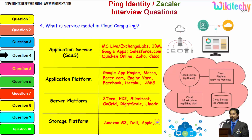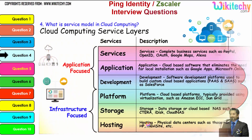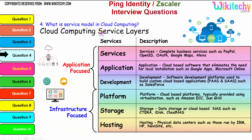Further examples by service model: the application service layer, application platform layer, server platform layer, and storage platform provided by Amazon S3, Dell, and Apple. The service layers are services, application development, platform, storage, and hosting, with typical examples under each. These are important services which are also commonly asked about in cloud computing interviews.